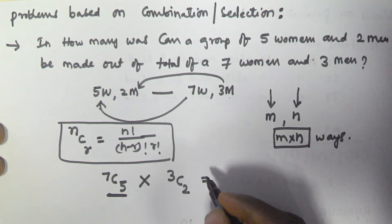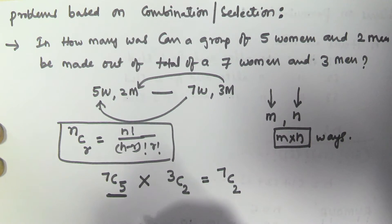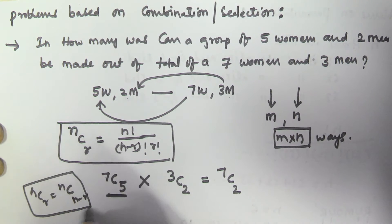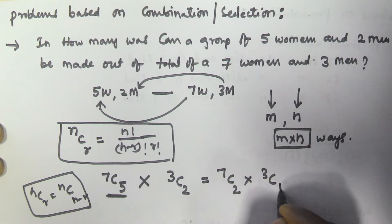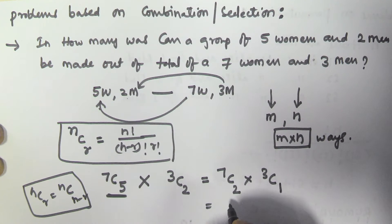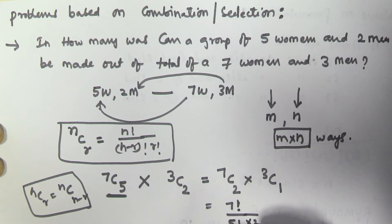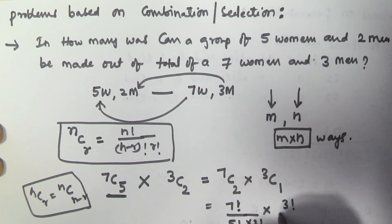Now, 7C5 can also be written as 7C2, because nCr is equivalent to nC(n-r). So 7C5 equals 7C2, and in the same manner 3C2 is equivalent to 3C1. So 7C2 is 7 factorial divided by 5 factorial into 2 factorial, and 3C1 is 3 factorial divided by 2 factorial into 1 factorial.